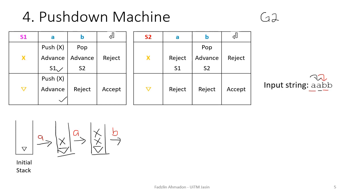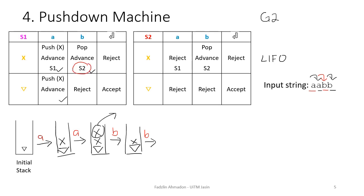We read X with B. X with B says pop and advance. A pop operation means the symbol on top of the stack is removed — remember we are doing a LIFO operation. After popping, we are left with a single X on the stack. We advance, which means we are reading the next symbol in the input string — the second B. The cell also says S2, meaning from this point onwards we need to refer to state 2.